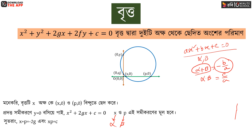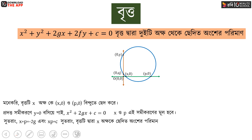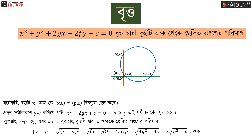If we compare with 2x plus 2g, we can get minus b by a equal to minus 2g. So comparing the circle equation on the x-axis with the standard quadratic gives us the sum of roots as minus 2g, and the product of roots as c by a equal to c.